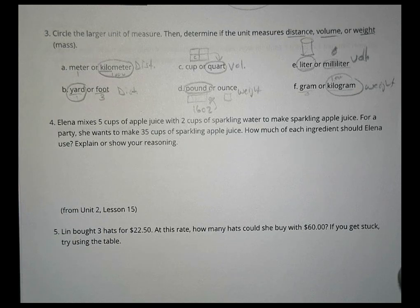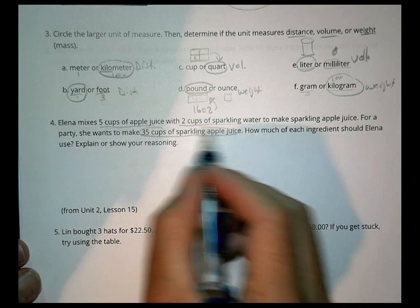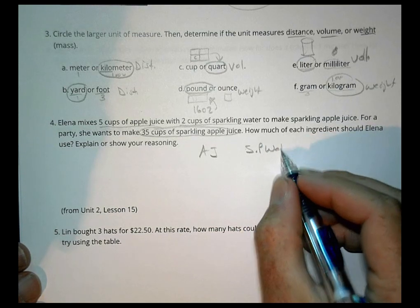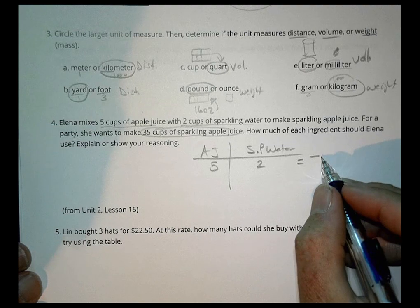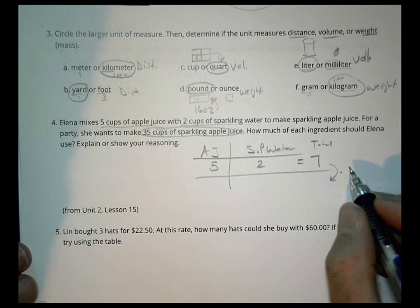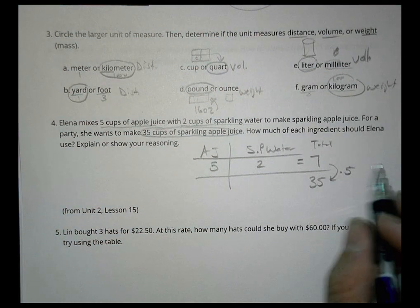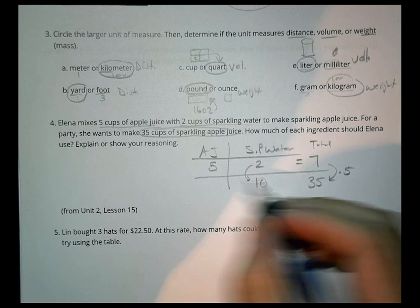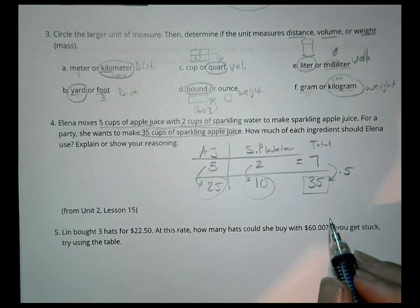Number four, some review questions from unit two. Elena mixes five cups of apple juice with two cups sparkling water to make a sparkling apple juice. For a party, she wants to make 35 cups of sparkling apple juice. So how much should she use? So we have our apple juice, and we have our sparkling water. We know that it takes five of those and two of those in order to make the special juice. Now that's going to give me a total of seven cups all together, right? Total. What we learned before is that I can take that same total, and if I use the right multiplier, if I multiply by, in this case here, I want to get the 35. I multiply by five. That would tell me I'm going to make five batches in order to get 35 total cups of sparkling apple juice. So I'm going to take that same multiplier, and I'm going to do two times five is 10, and five times five is 25, and that's the amount of apple juice and sparkling water I would need to make 35 total cups of sparkling apple juice.